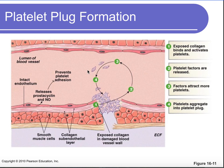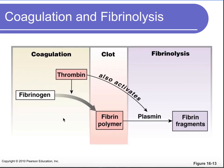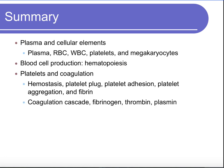To review: platelets circulate in the blood and only aggregate when damaged blood vessel collagen is exposed, forming a loose platelet plug as a temporary measure. Vasoconstriction also decreases blood flow. The coagulation cascade then forms thrombin, which converts fibrinogen into fibrin to create a reinforced clot. Once the tissue repairs, fibrinolysis — mediated by plasmin — dissolves the fibrin clot. And that's it for this chapter.